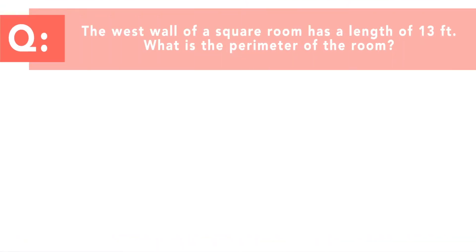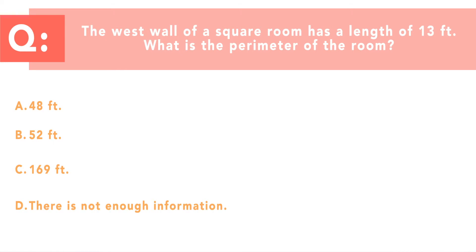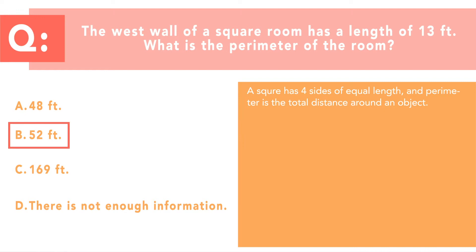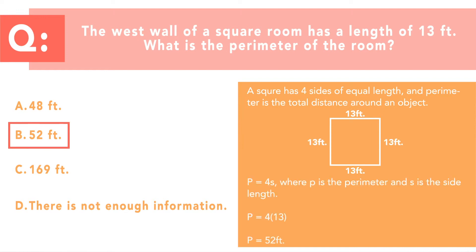Let's look at the fourth question. The west wall of a square room has a length of 13 feet. What is the perimeter of the room? The answer options are 48 feet, 52 feet, 169 feet, or there's not enough information to know. The correct answer is 52 feet. A square has four sides of equal length, and the perimeter is the total distance around an object. To find the perimeter of a square, follow the formula p equals 4s, where p is the perimeter and s is the length of a side. In this case, p equals 4 times 13, which is 52 feet.